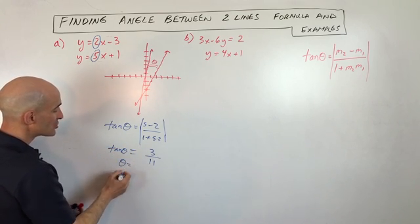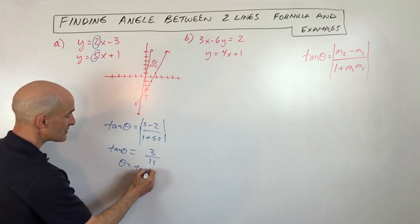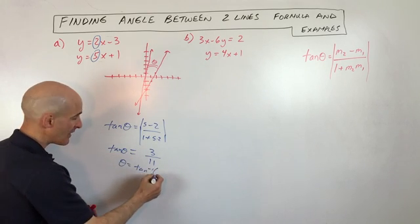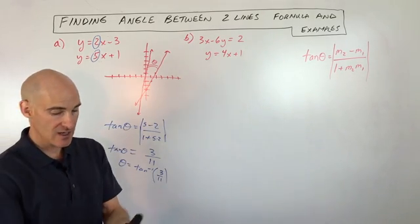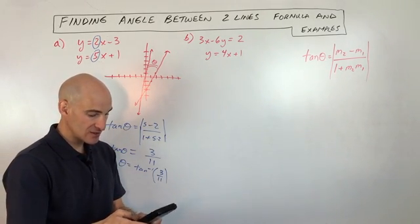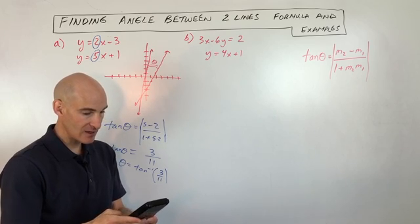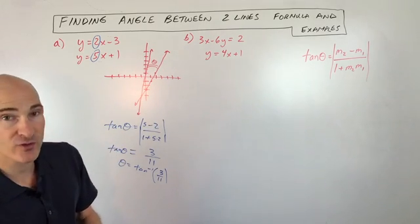Then what we have to do is just do the tangent inverse to find theta, to find the angle. So it's the tangent inverse of 3/11ths. Let's go to the calculator. Let's just see what that is. So we've got tangent inverse of 3 divided by 11 and we get 15.3 degrees.